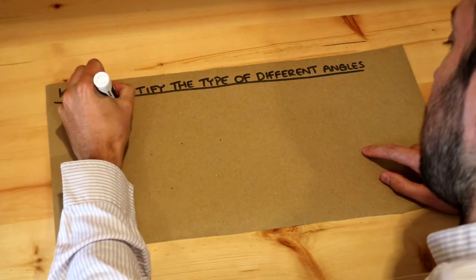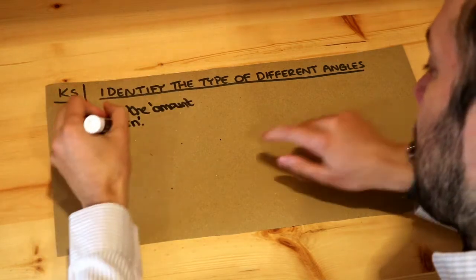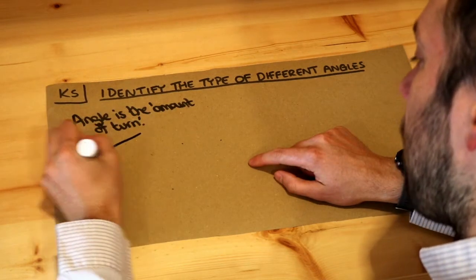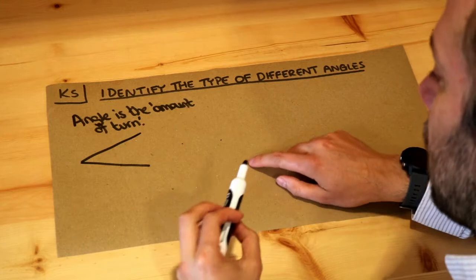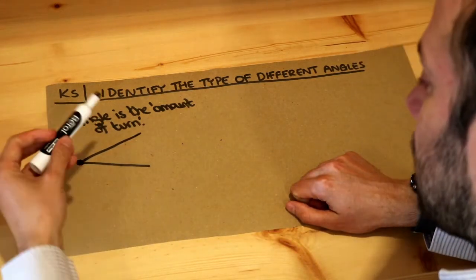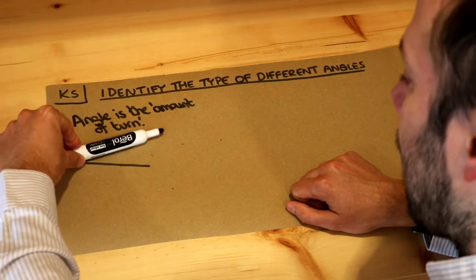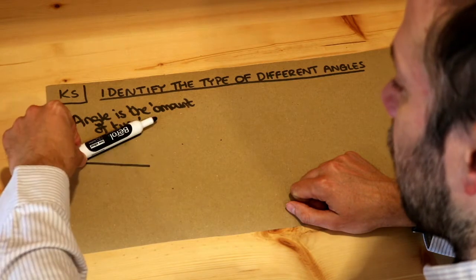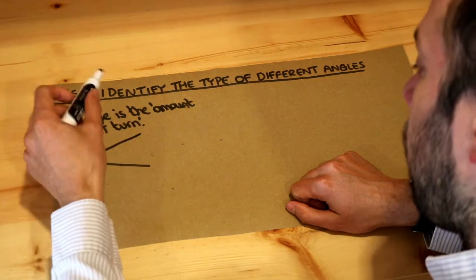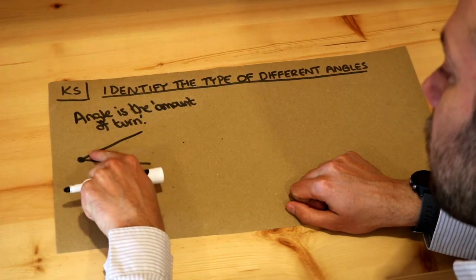So an angle is the amount of turn. For example, if we have two lines and we say we want to find the angle between the two lines, what we mean is that if we look at where the two lines meet and we put our pen on one of the lines, it's the amount our pen has to turn to get from one line to the other. And we often put a little curvy line to say we're interested in the angle here, the amount of turn.